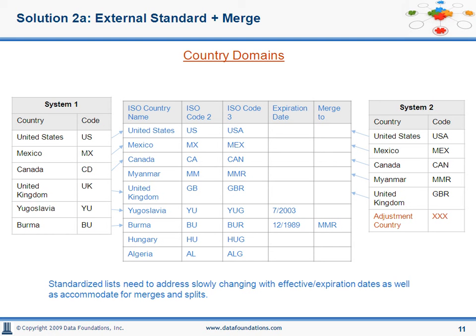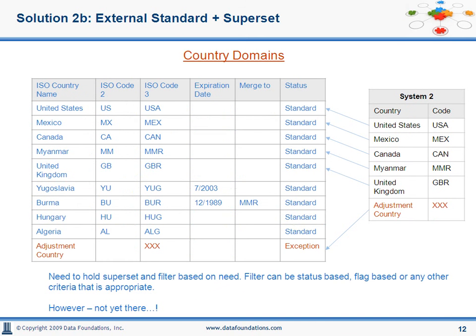So that raises the question of what to do with the adjustment country. Should it be included in the gold copy or not? As far as the adjustment country is concerned, it's not really a country and you don't want to send it out to subscribing systems, but at the same time it is relevant from a reporting or BI perspective. The master list for BI, then, should always be a superset, even though the norm is not to put dirty data in the gold list.